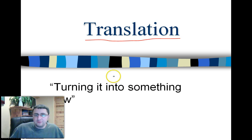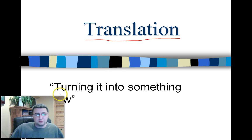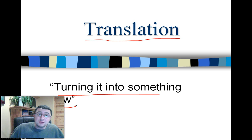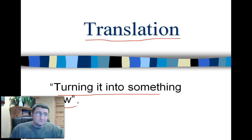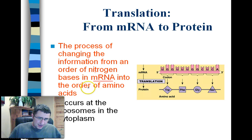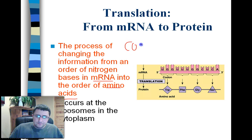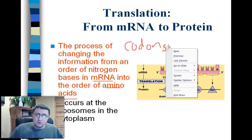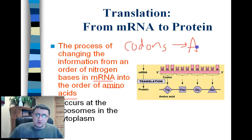Translation is kind of like what happens if you have to translate a language — you take English and turn it into Spanish, or Spanish and turn it into English. You're taking something and turning it into something new. Sort of like when you put bread in a toaster and it comes out as toast. So translation is the process of changing information from one order of nitrogen bases in mRNA into the order of amino acids. We're taking those codons and turning them into a sequence of amino acids, which I abbreviate AA.